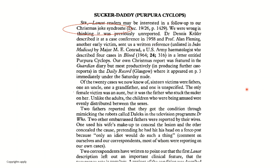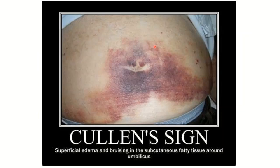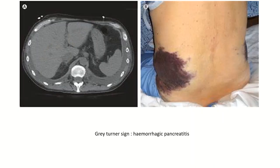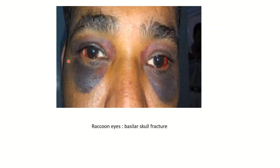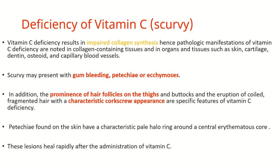Various types of traumatic purpuras have been described. There is the 'suction' or cyclops purpura from suction-type toys. The love bite is a kind of traumatic purpura. The Cullen sign, a sign of hemorrhagic pancreatitis, is actually a type of traumatic purpura, as is the Grey Turner sign. The Raccoon sign — purpuric lesions around the orbit — is a sign of basilar skull trauma or fracture, and similarly the Battle sign is a sign of trauma to the head.